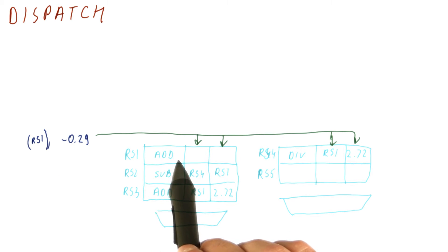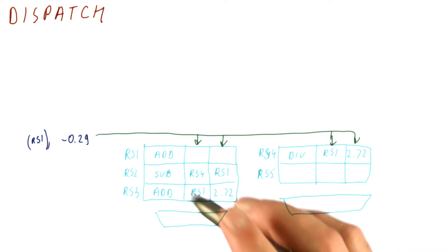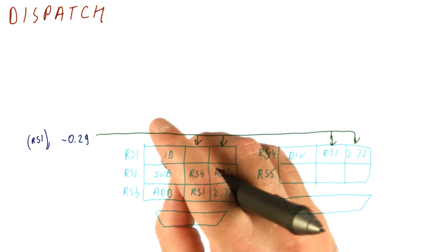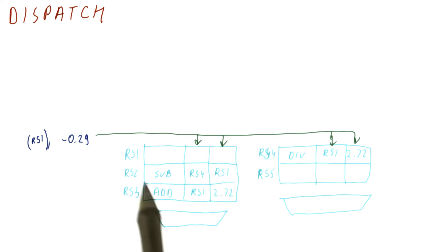We're now going to free this reservation station basically. It's finished its job. So the first thing we're going to do is free this reservation station. Now it's empty and it's ready to receive another instruction that issues.